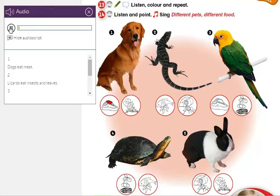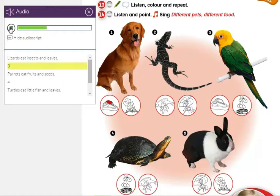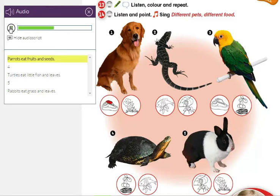1. Dogs eat meat. 2. Lizards eat insects and leaves. 3. Parrots eat fruit and seeds.